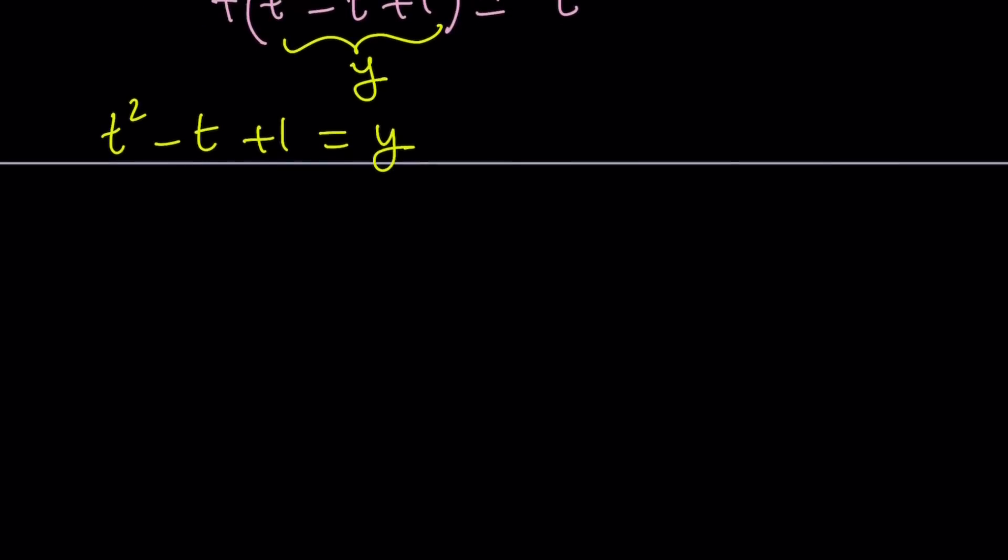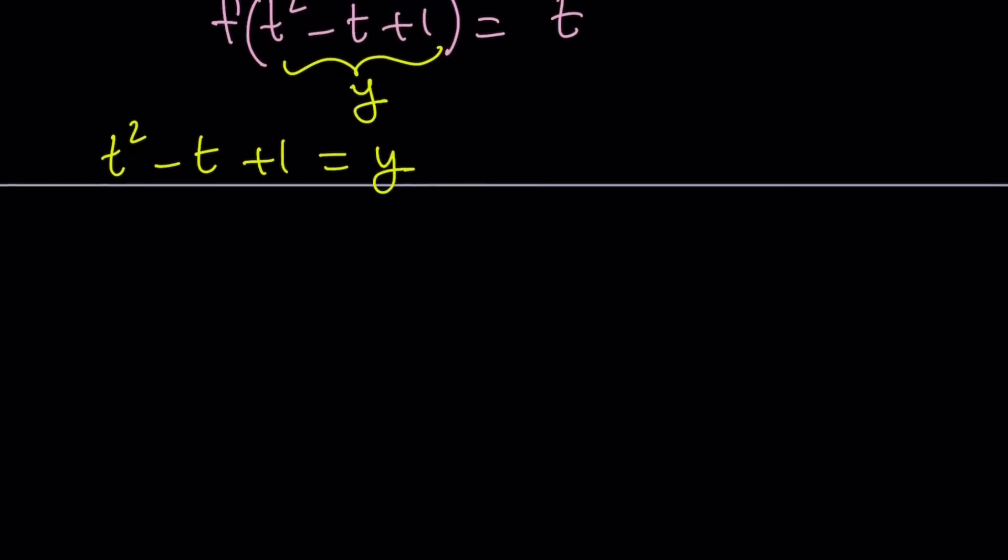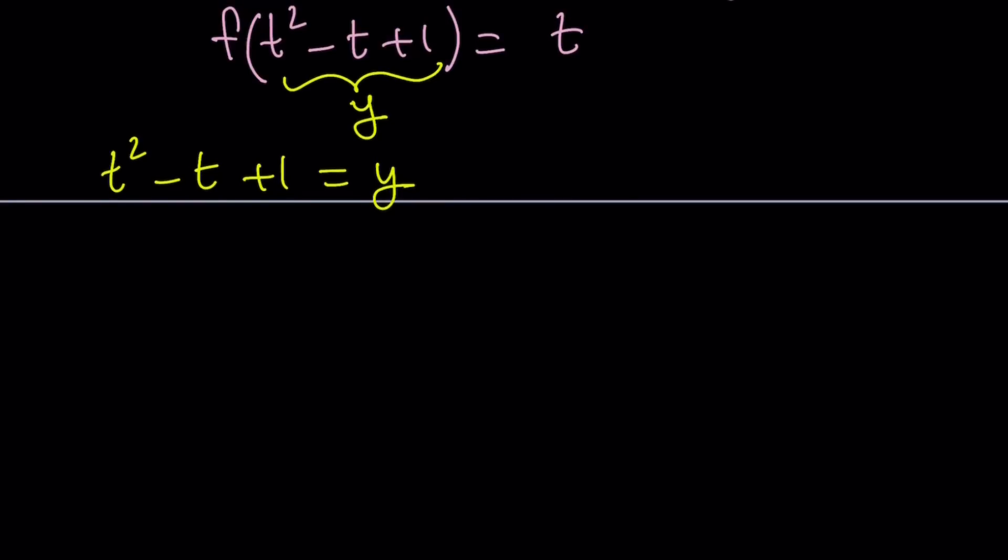And here's what we're going to do: we're going to complete the square here. Our goal is to solve for t in this equation. So let's go ahead and write it as follows: t squared minus t, and I'm going to break down the 1 into 1 fourth plus 3 fourths, and that is equal to y.